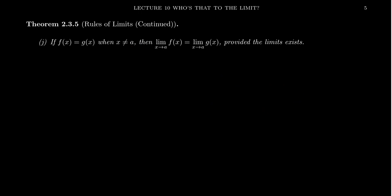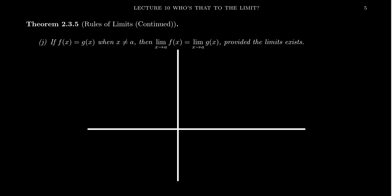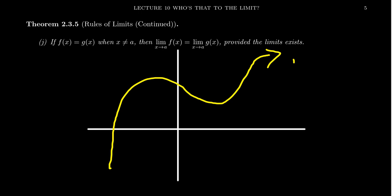Let me give you an example of such a thing. Suppose we have some function — here's our x-axis, here's a y-axis, and we graph our function. It's doing something like this — a nice, pretty function. When you pick any point on the graph and start approaching it from the right or from the left, you're going to get that point right there. The limit would exist in that situation.